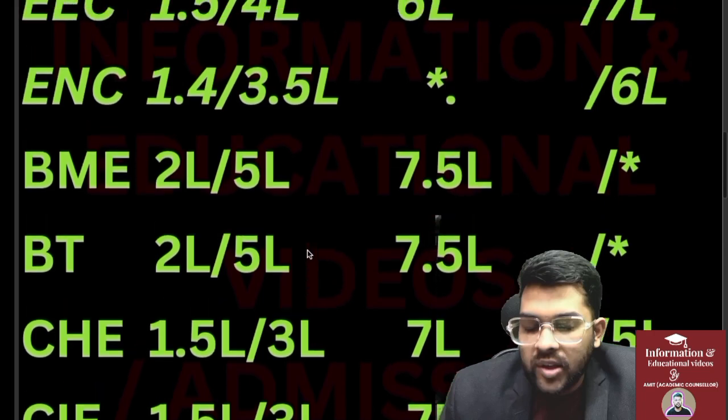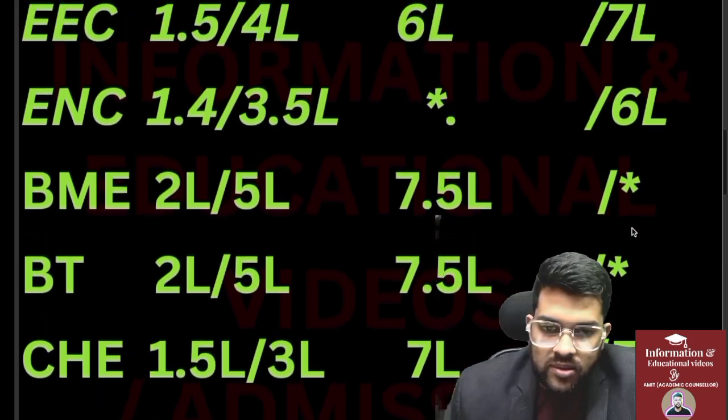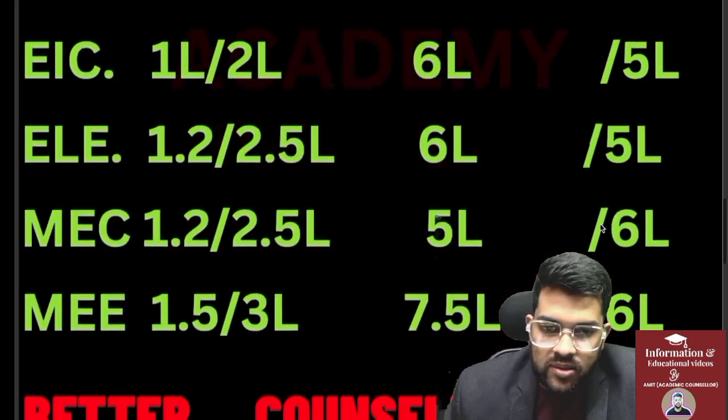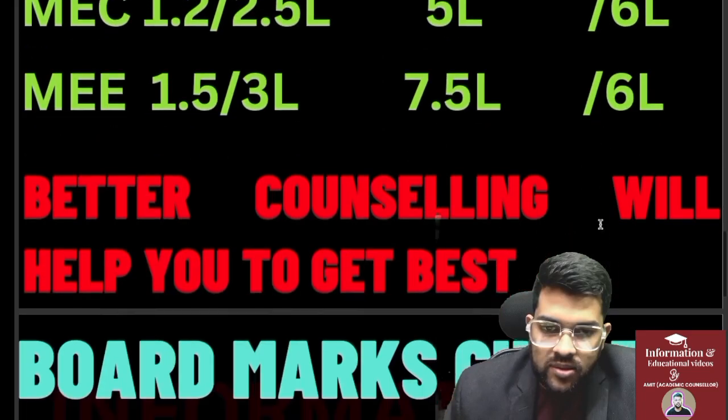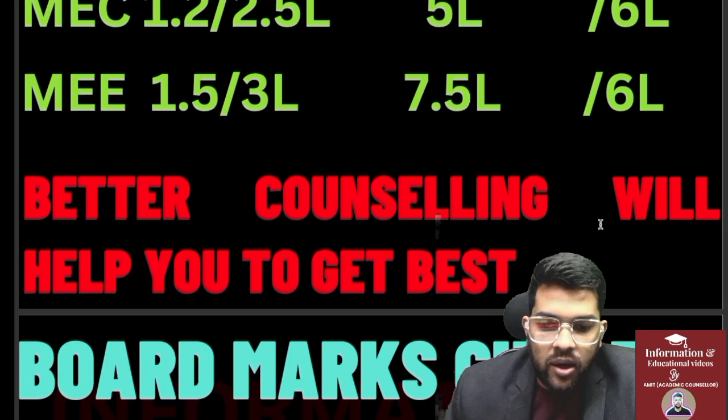This is about the JEE rank score cutoff. You can check other categories on screen — SC and BC are shown sideways. Now let's move on to the board marks cutoff.